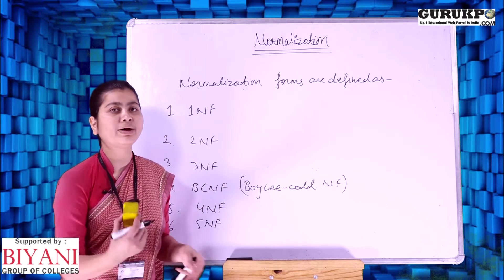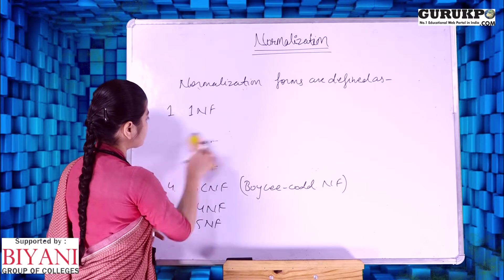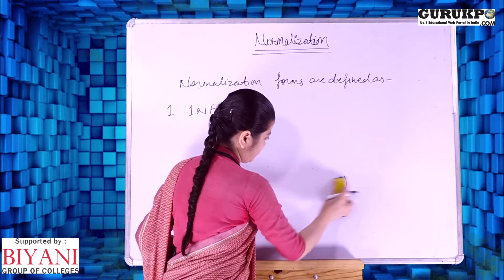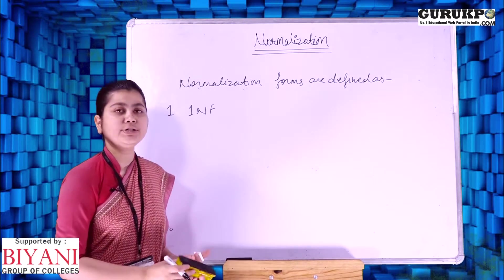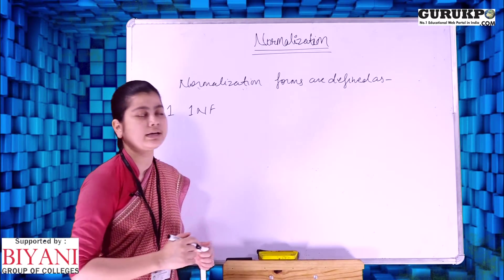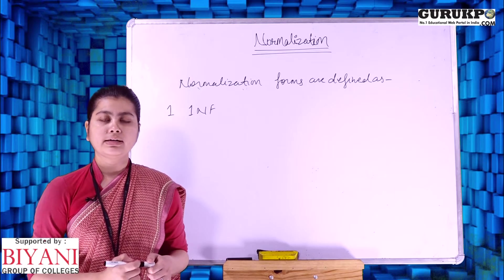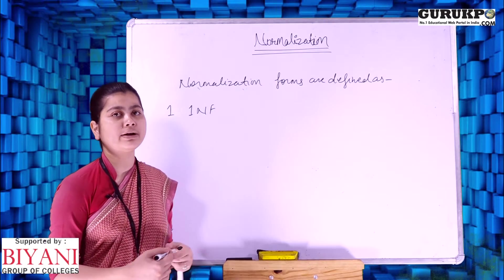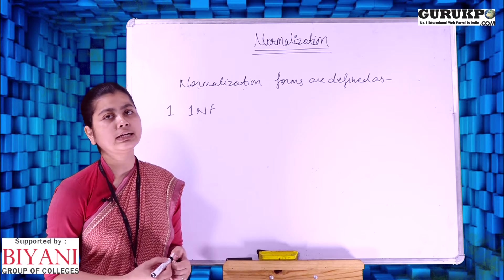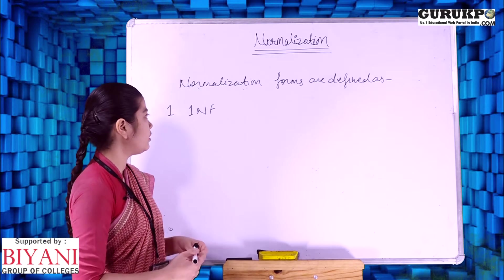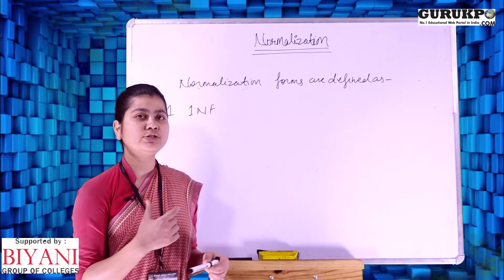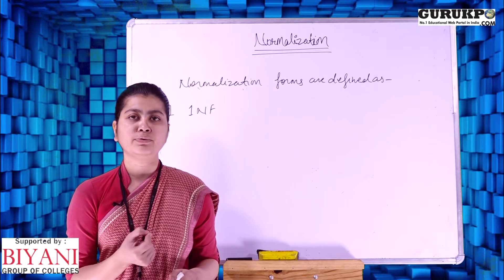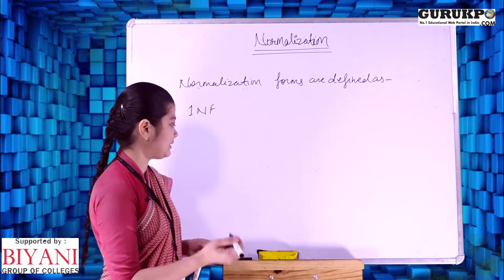Let's discuss all these normalization forms one by one. First, we take the First Normal Form. A relation or table is in First NF if all the attributes or domains have only a single atomic value. In First NF, we check that each row and each column has only a single value of an attribute.